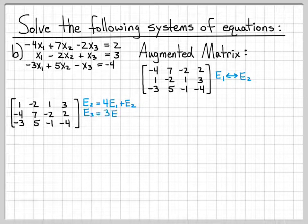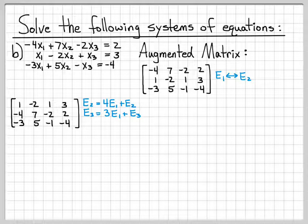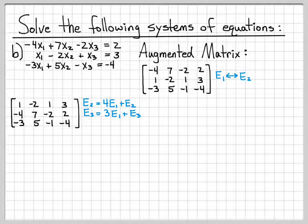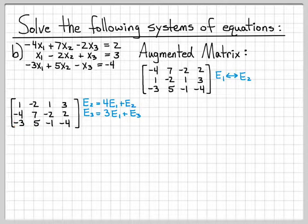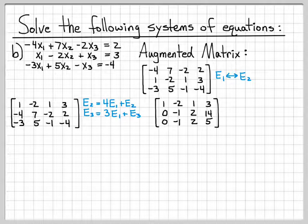To get some 0s underneath the 1 in that first column, I can let equation 2 be equal to 4E1 plus E2. That essentially cancels out this negative 4. And then if I let the third equation equal 3 times the first equation plus the third equation, that essentially adds 3 to negative 3 and gets a 0 there. So after I do that, I end up with this system of equations. These are very similar to what we did in the first video.